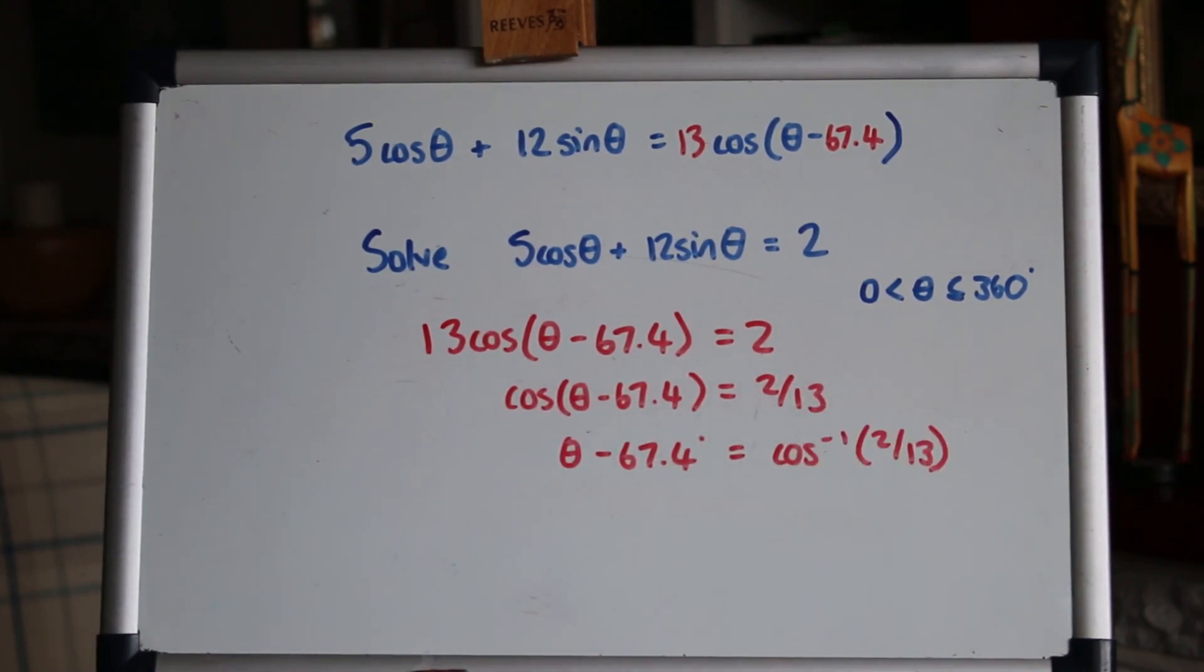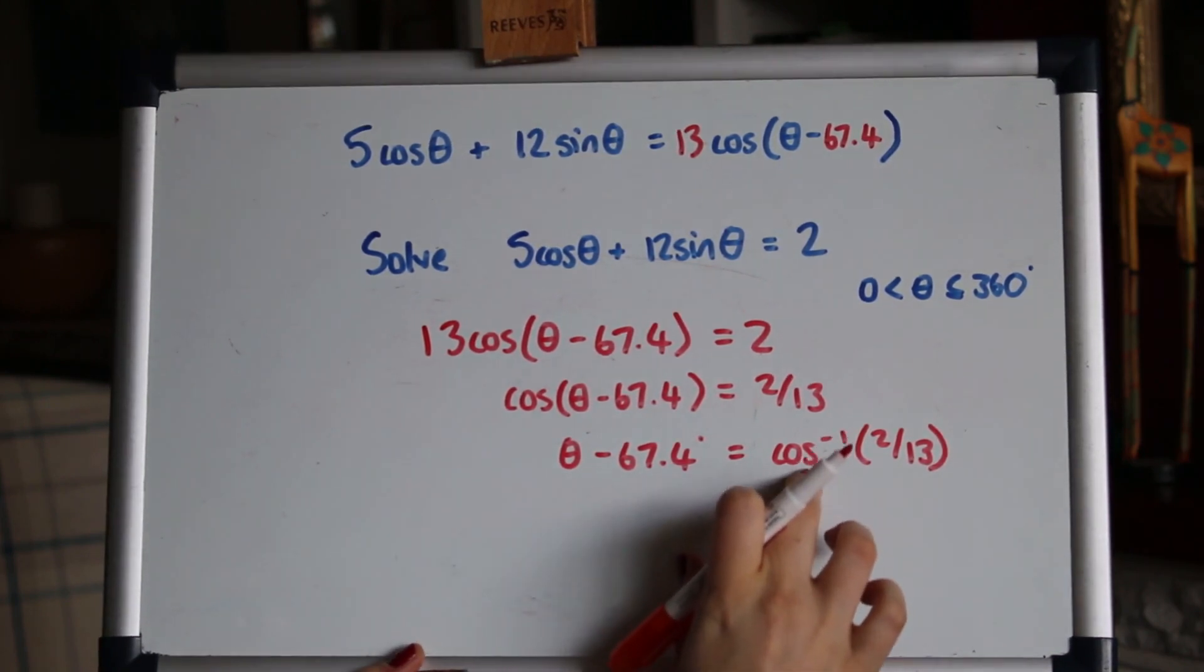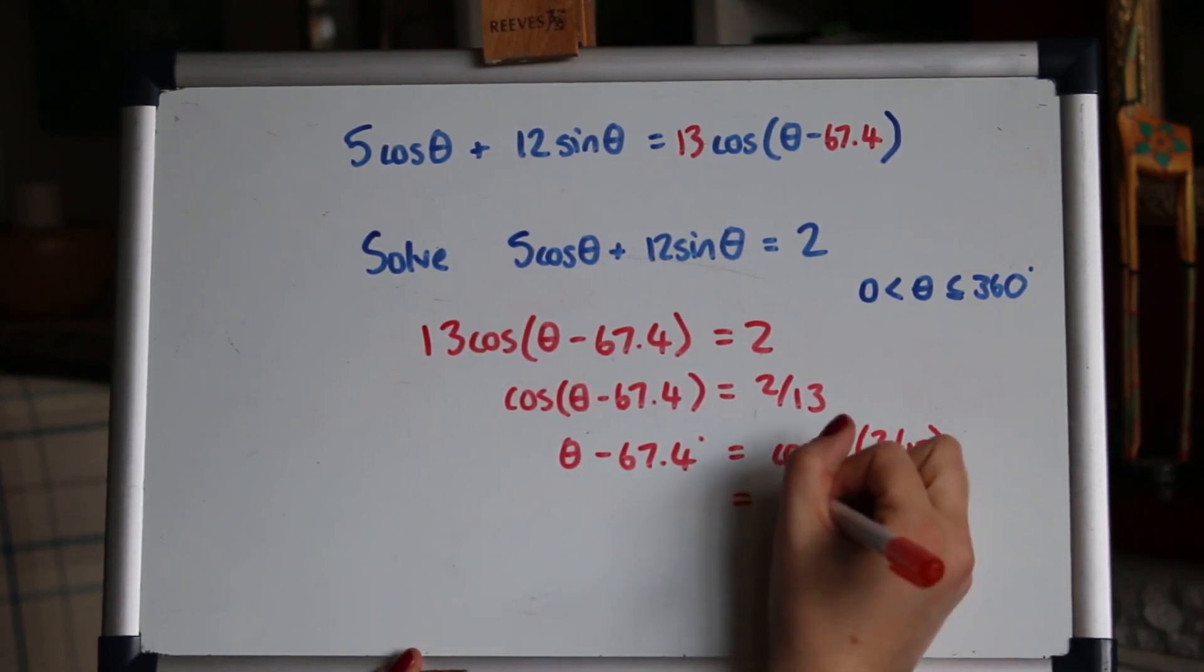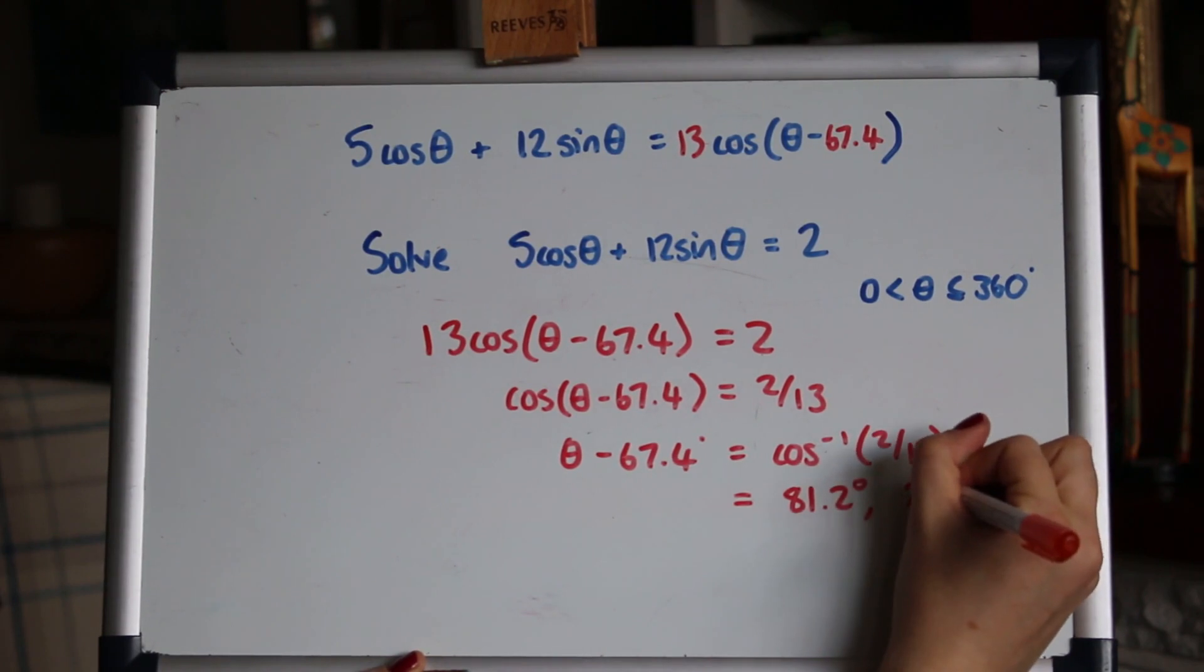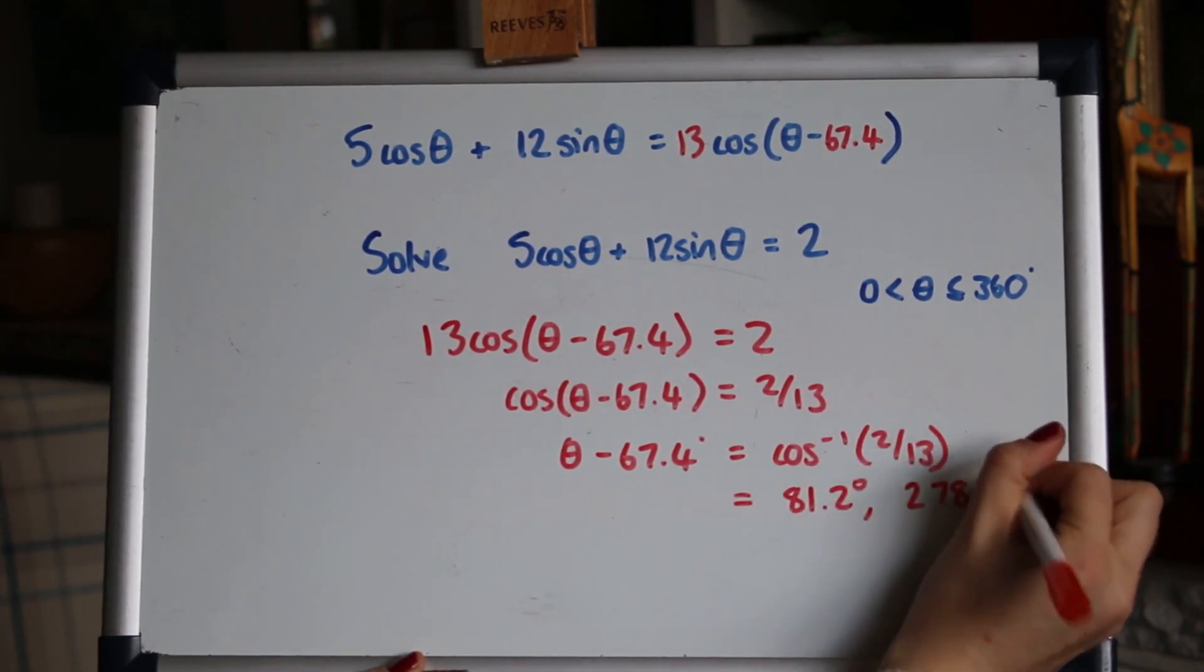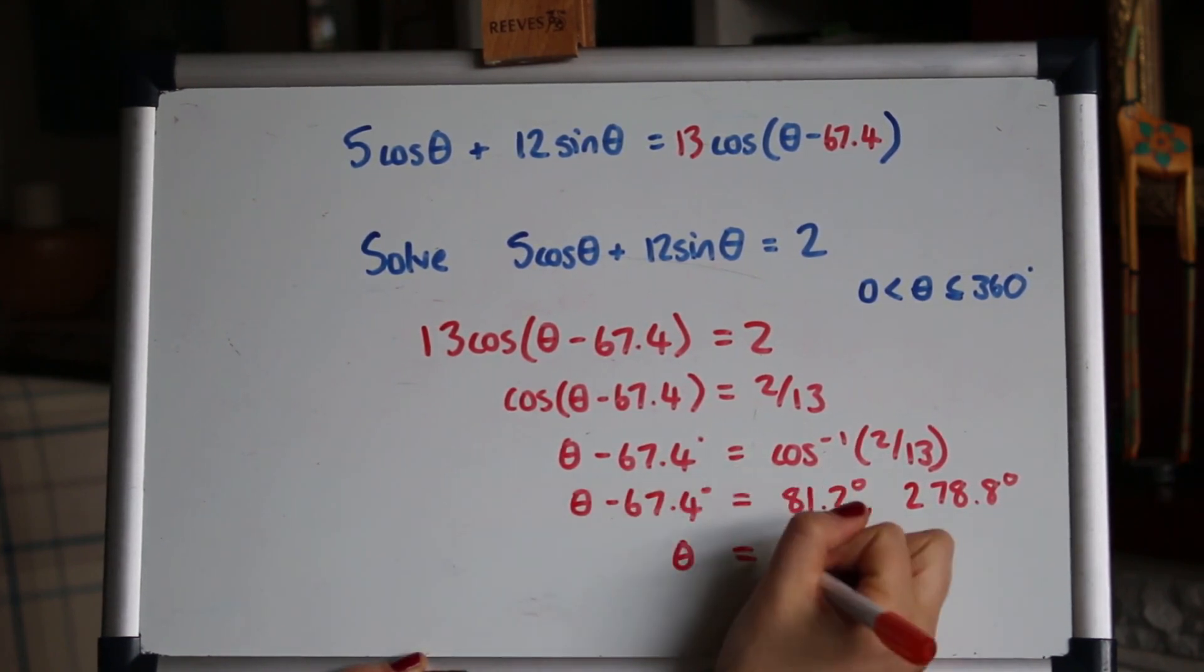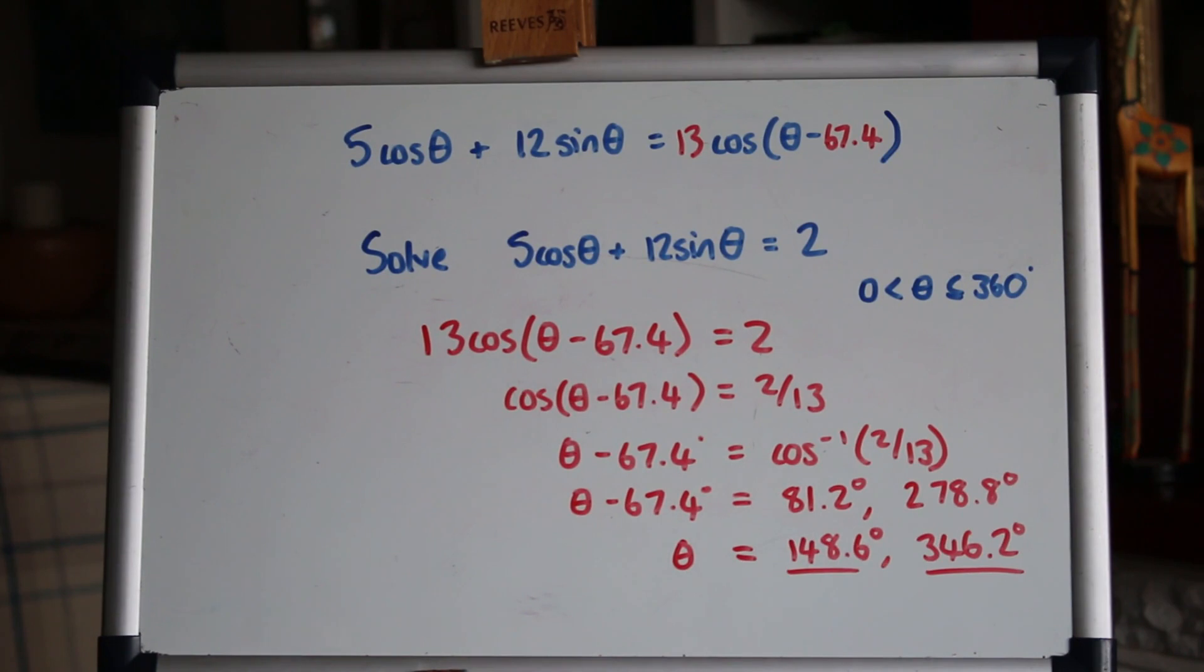Now, it's important when you solve trig equations, as you know, to use the cast diagrams or the graphs to get multiple solutions. And it's important to do that at this stage, before you undo the side. Because it's at this point that we're doing the inverse cos. So you must get the multiple solutions now. And get the first solution on the calculator. And then the next solution, using cast diagram or graph, whatever you choose. Now, because those are both equal to θ - 67.4, now I can add the 67.4 to those solutions. So they're the two solutions in that range. Great.